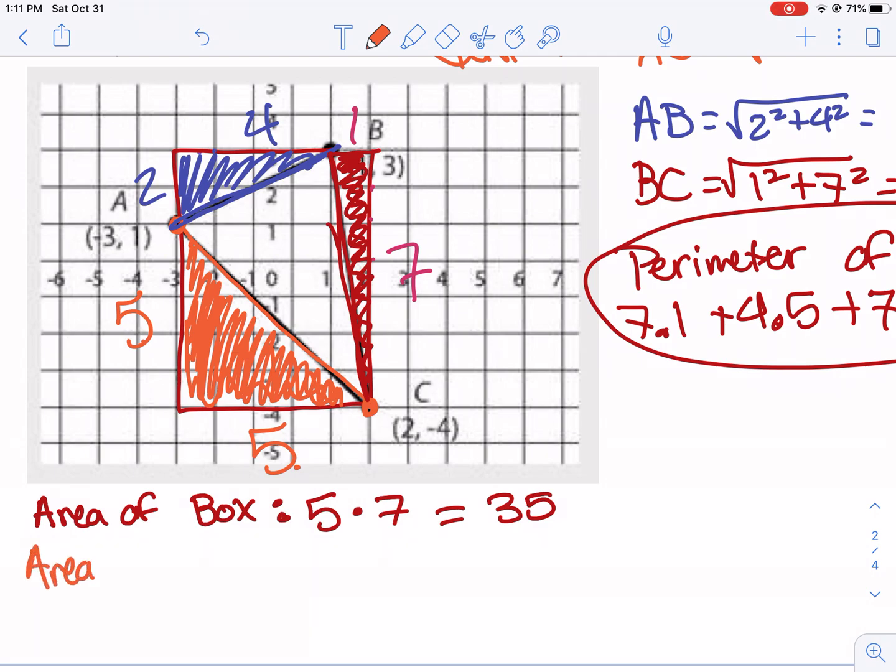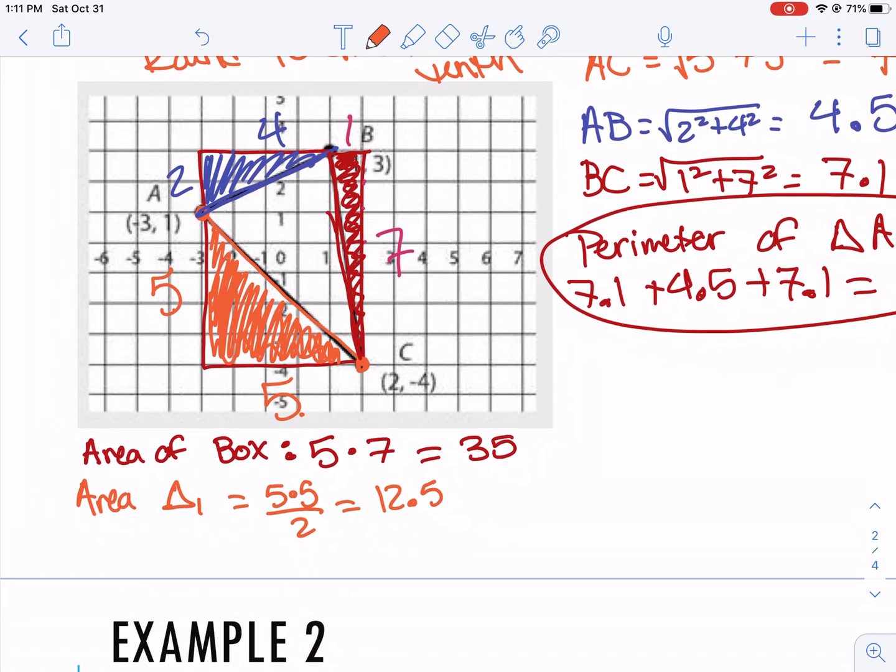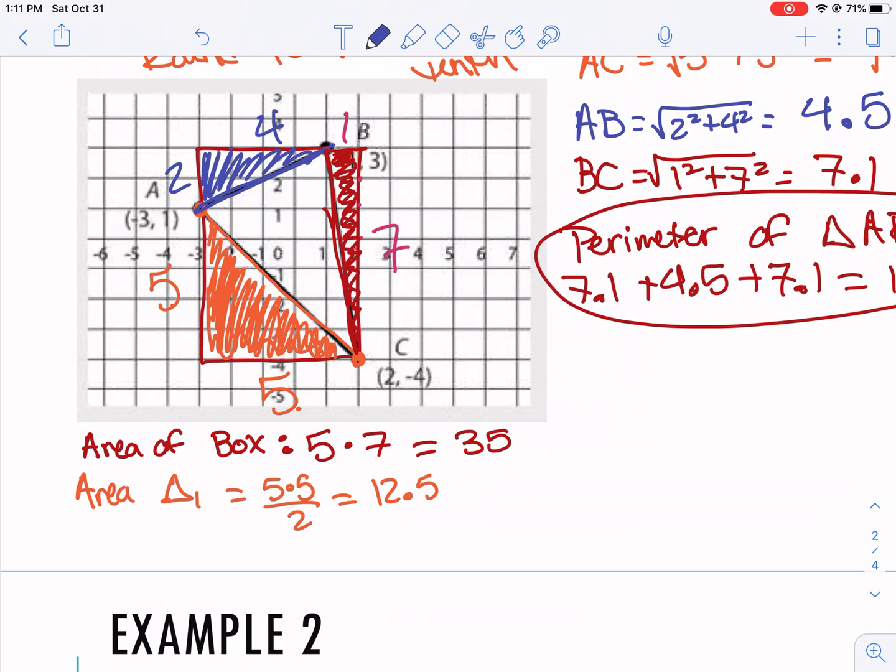Then you find the area of each one of these triangles. So area triangle 1, which is 5 times 5 divided by 2, is 12.5. Then the area of this second triangle is 2 times 4 divided by 2, which will give me 4. And then the area of triangle 3 here is 1 times 7 divided by 2, so 3.5. So you should see all four, or these three together, plus this missing one we're trying to find, are going to add up to this total area of 35.